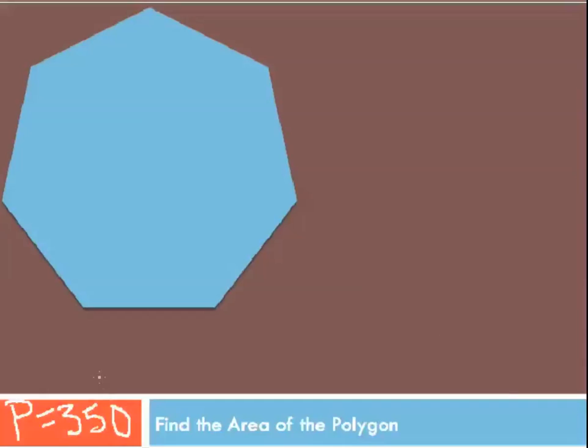If we know the perimeter and we know that it's a regular polygon, we can find the length of each side by taking the perimeter, which in our case is 350, and dividing it by the number of sides, in our case seven. So for this heptagon, each side is 50 units long.